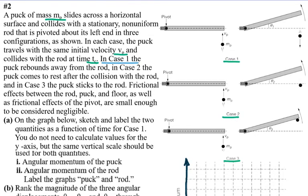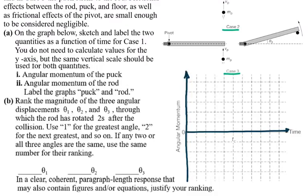For Case 1 the puck rebounds away from the rod. Because the rod is not moving before the collision, up until time t_c there is going to be a collision. The rod is going to have no angular momentum before, and after the collision the rod's angular momentum is going to jump to some value.